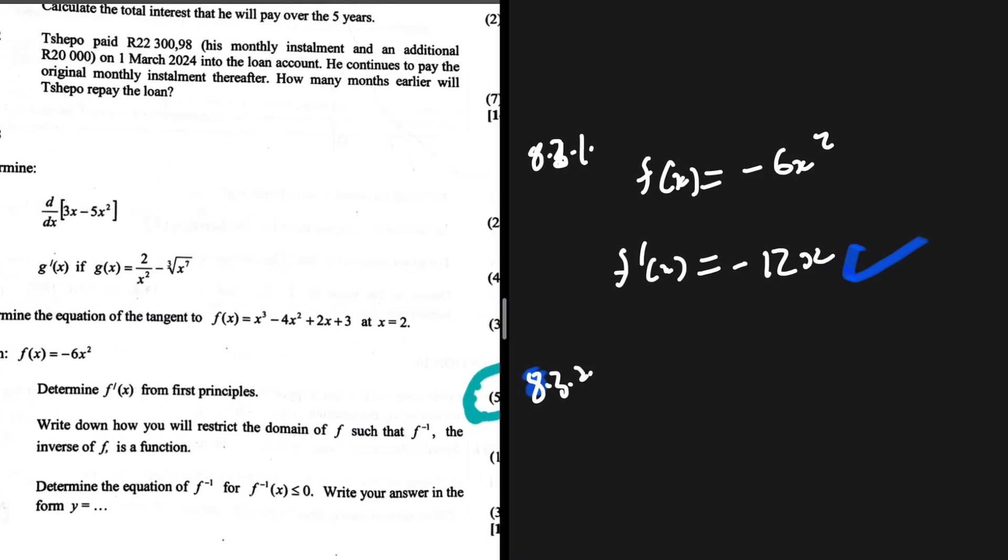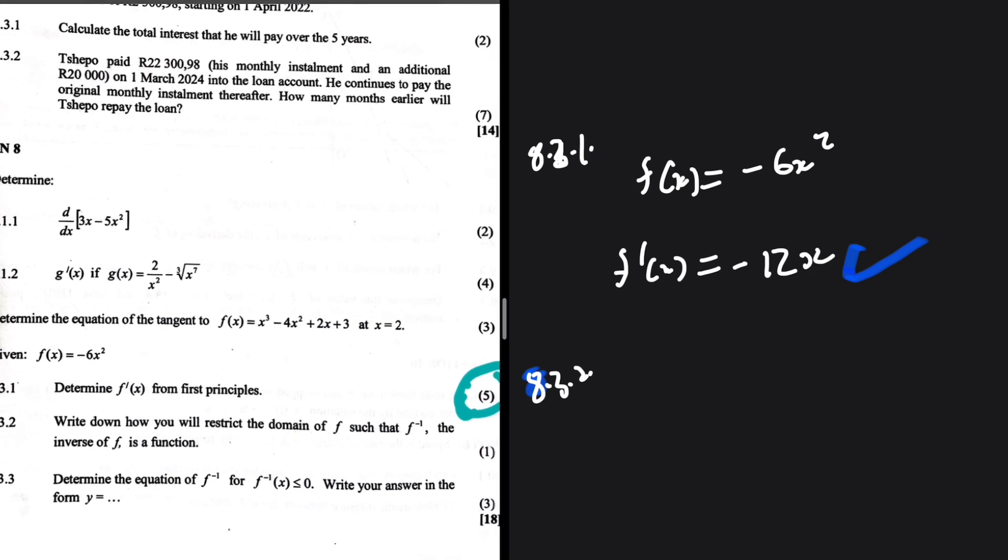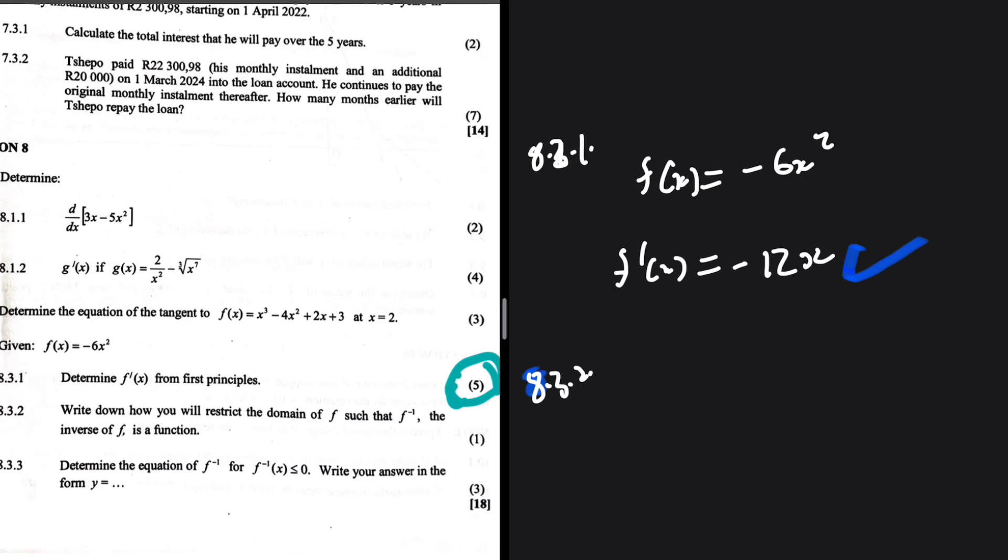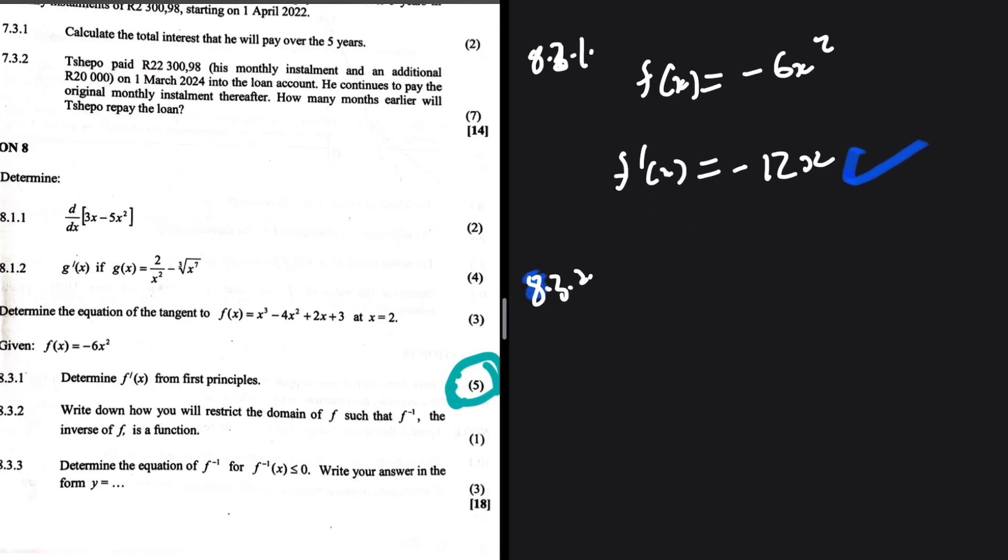The power rule just helps you to see if you've done the correct thing. And then 8.3.2. Write down how you will restrict the domain of f such that f inverse, the inverse of f is a function. Okay. In order for me to explain this, I will also be answering 8.3.3 in the same way. Let me show you why.